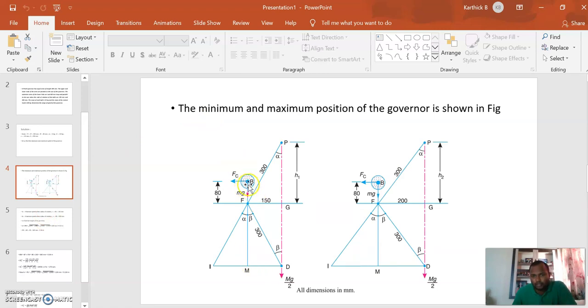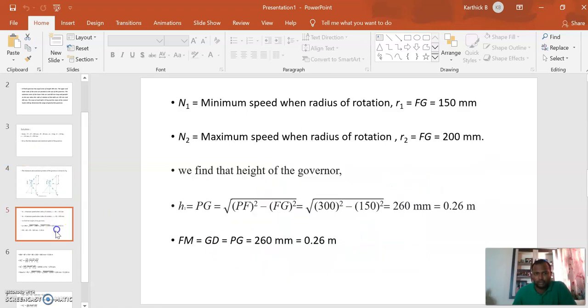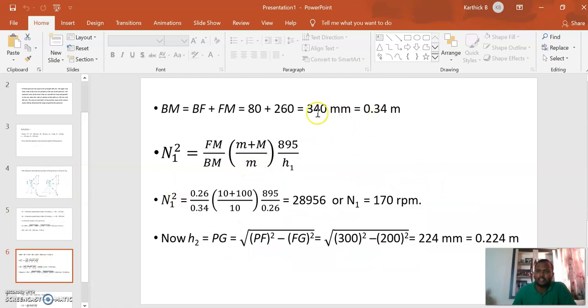We can split BM into BF and FM. BF is 80 mm given in the problem. FM we found previously. Adding both, we get 340 mm or 0.34 meters.